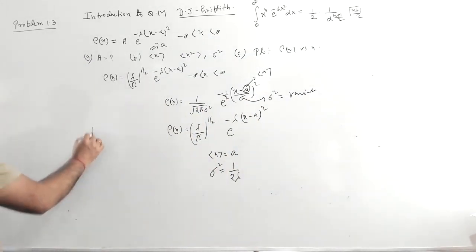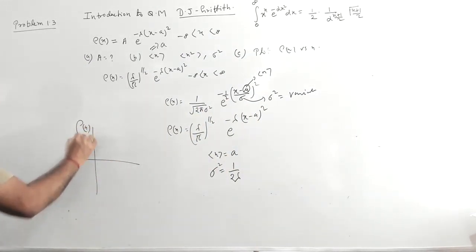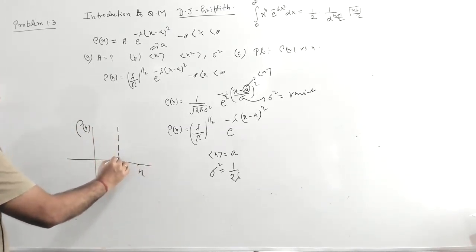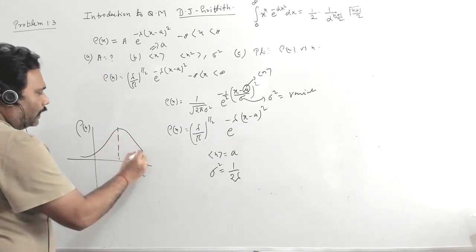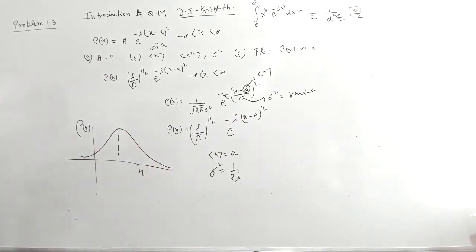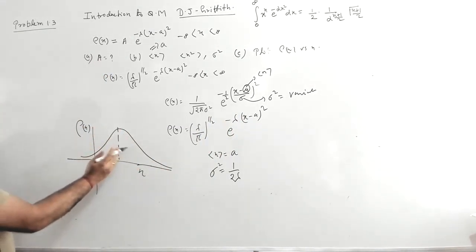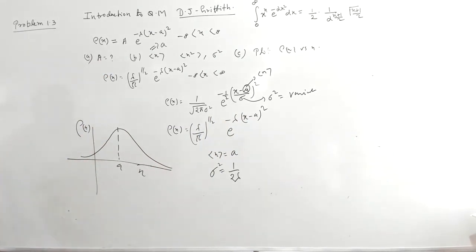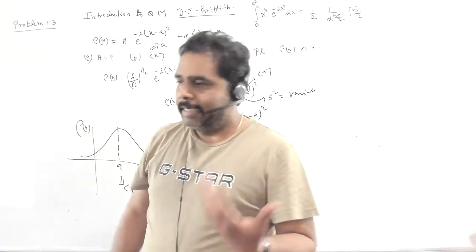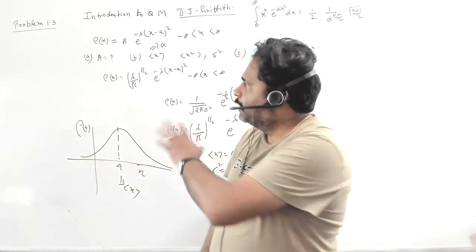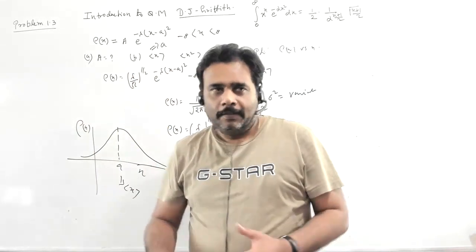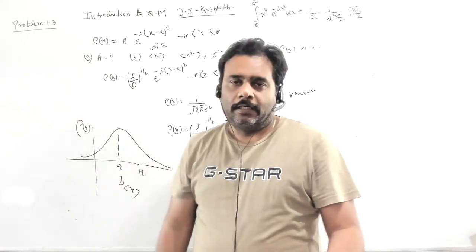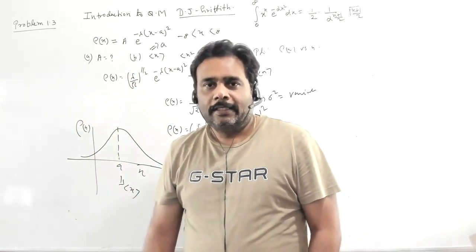When we plot ρ(x) versus x, we get a symmetric distribution about x equals a. The 50% probability is less than a and 50% is greater than a, and this a is nothing but the expectation value of x. It's a very wonderful problem. You can use the property of Gaussian, or from the gamma integral you can easily calculate this. If you have any query, you can message on our YouTube channel. Thank you.